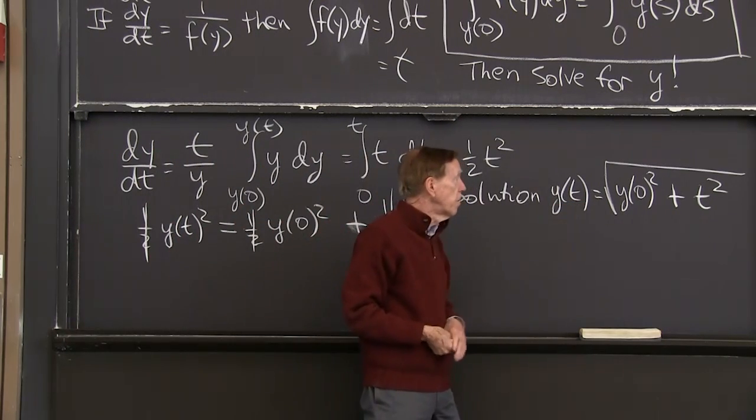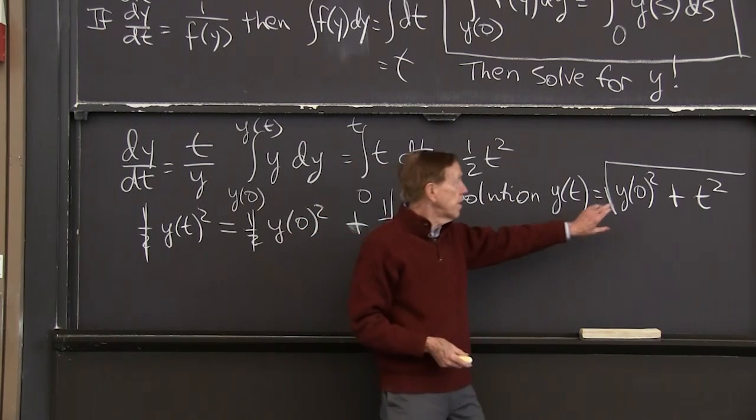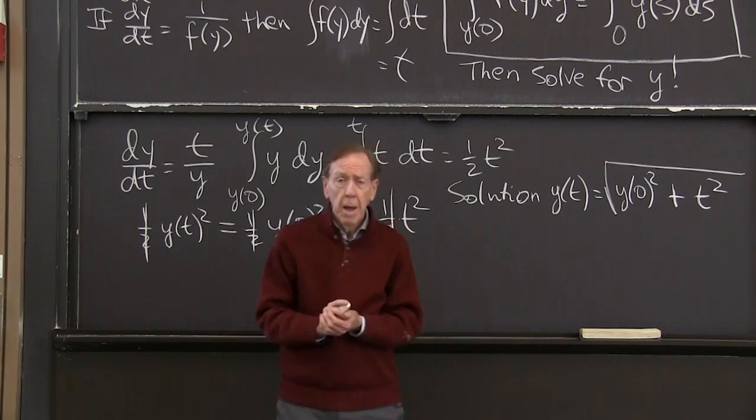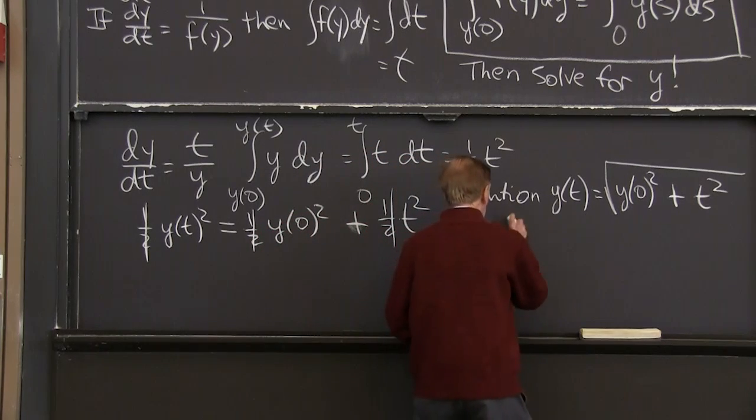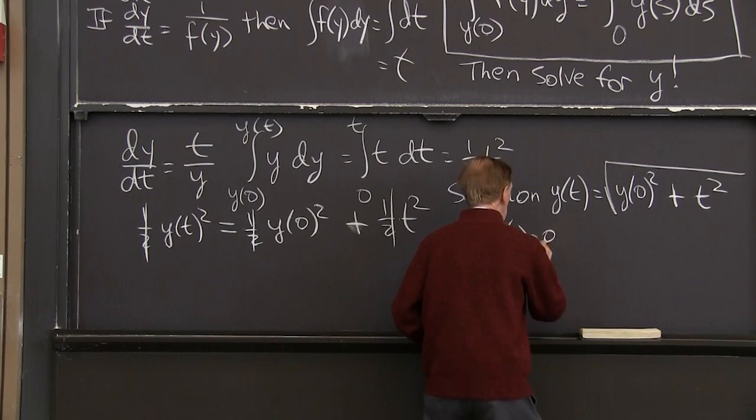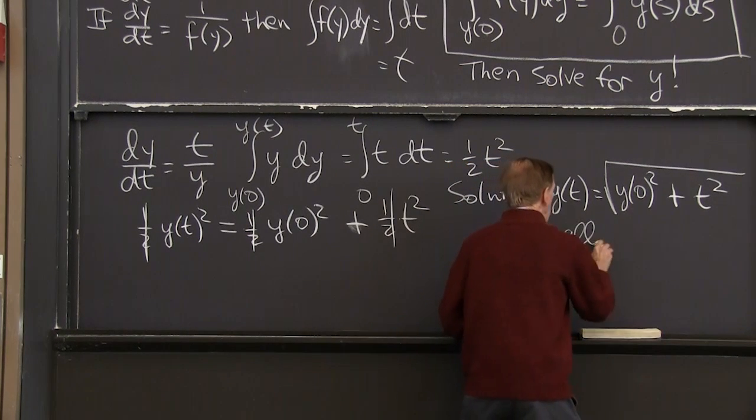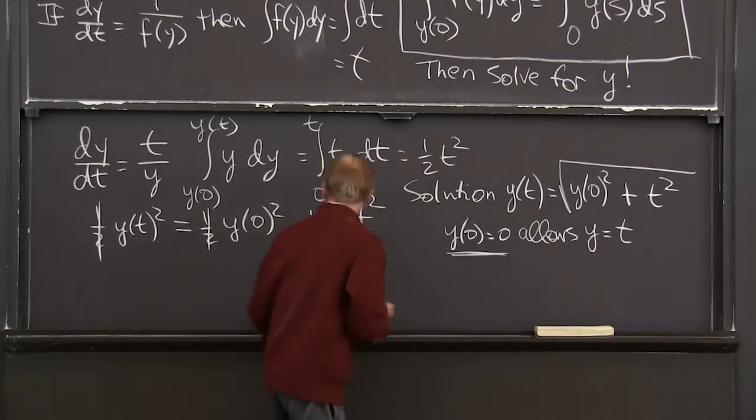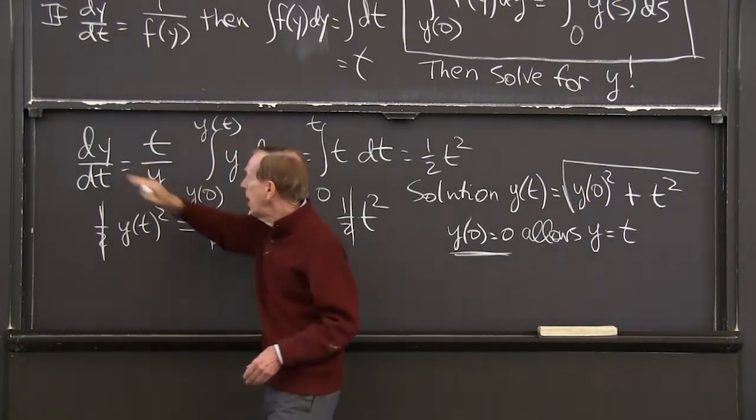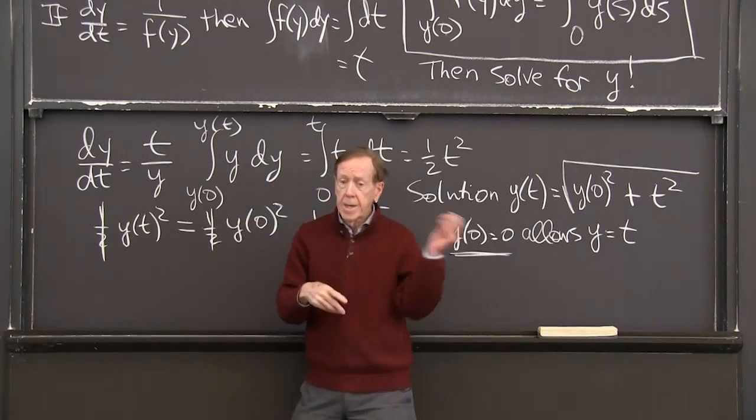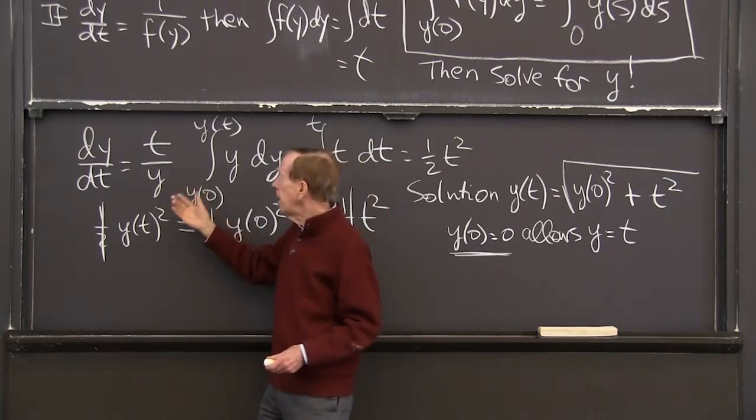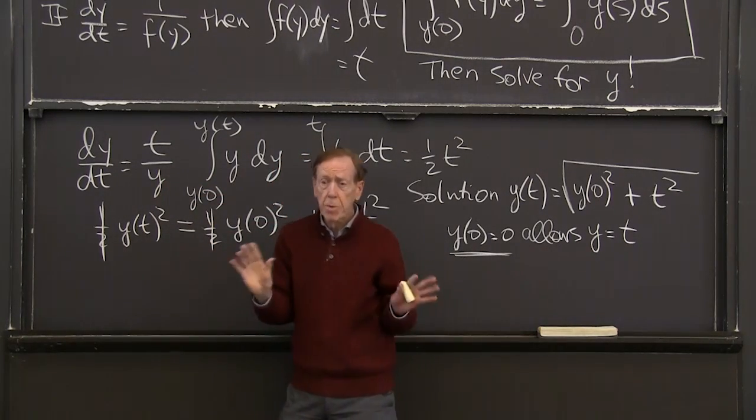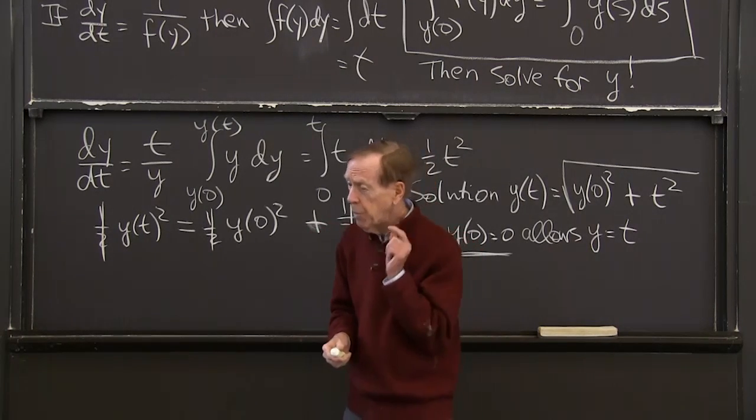Actually, the solution would still be correct. If y of 0 is 0, I would get the square root of t squared. I would get t. So y of 0 equals 0 allows the solution y equals t. And that is a solution. That if y is equal to t, then dy/dt is 1. And on the right-hand side, t over y is t over t is 1. So the equation is solved.